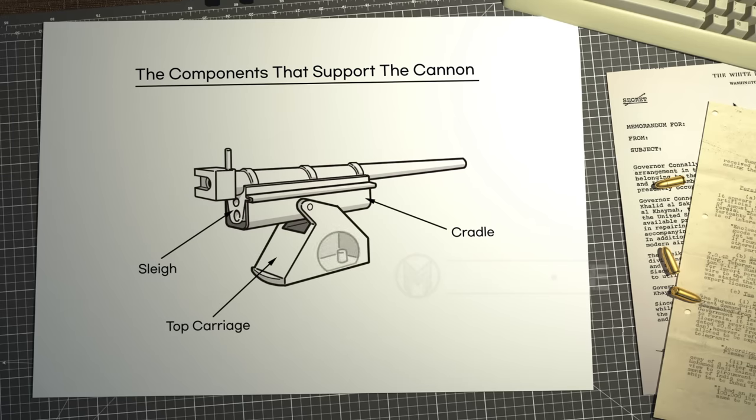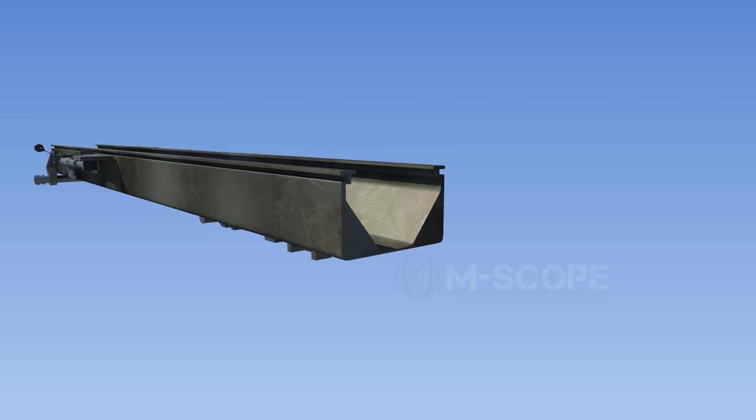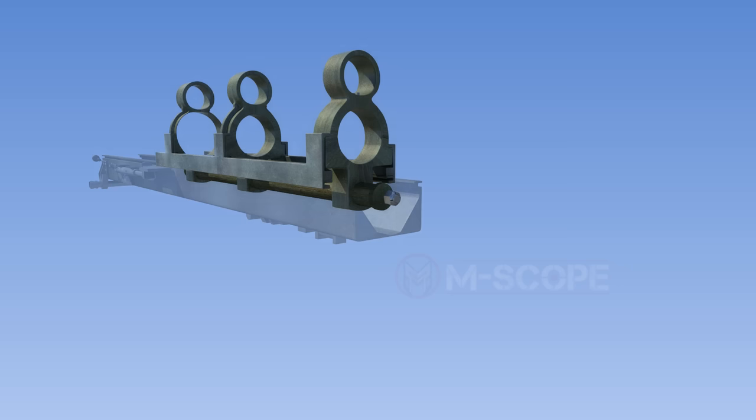The top carriage supports the cradle and can be rotated around a pintle. Finally, the bottom carriage bolsters the top carriage. The cradle is U-shaped. Connected above it is the sleigh which allows the cannon tube to move around gently.